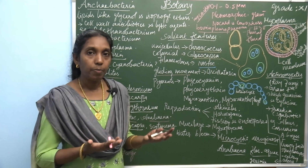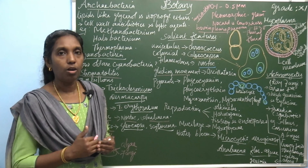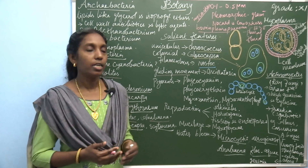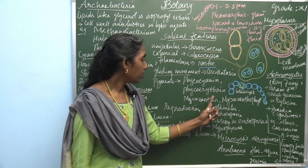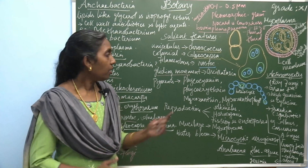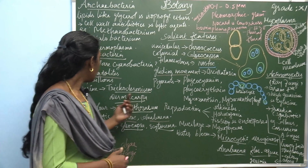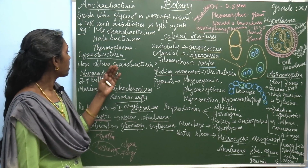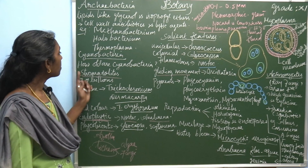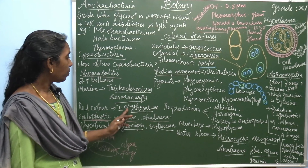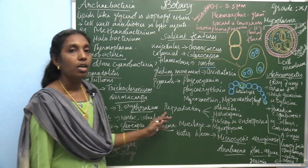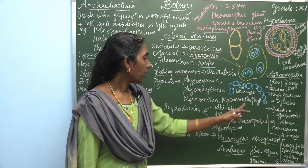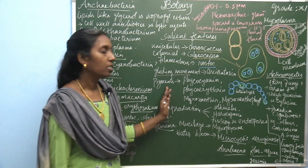Pigments are a very important characteristic feature of cyanobacteria, which come under blue-green algae. The pigments present are phycocyanin, phycoerythrin, and myxoxanthophyll. Phycocyanin is present because it is a Cyanophycean member. The red color seen in the Red Sea due to Trichodesmium erythraeum is related to phycoerythrin.